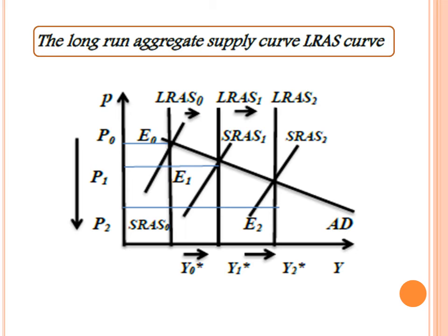The vertical LRAS line relates the price level and the level of national income after all adjustments take place to remove any gaps. The economy will return to the potential level of output — whether from an inflationary gap or recessionary gap — as shown by this vertical line, the long run aggregate supply curve. It is also called the classical aggregate supply curve. The level of output is always constant in the long run, meaning the economy is producing at the potential level of output.